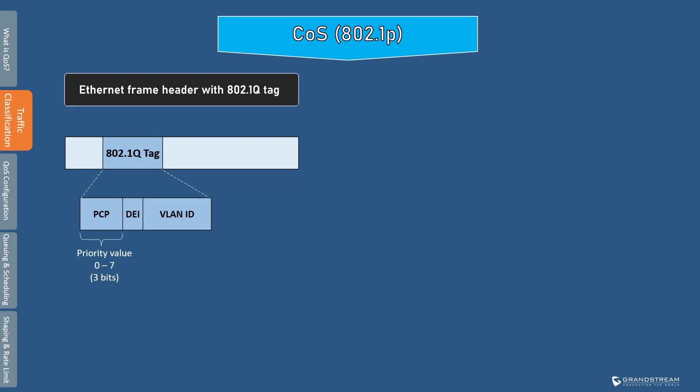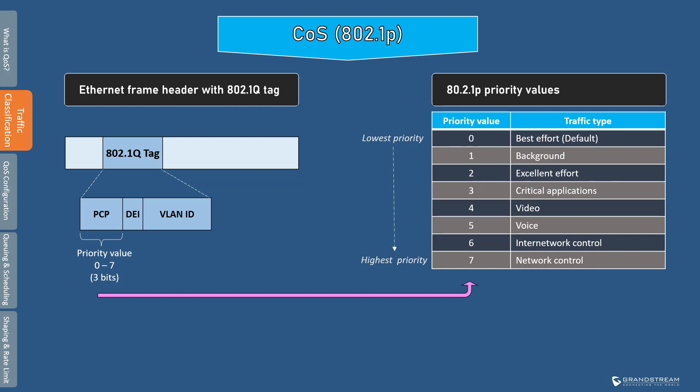This is a Layer 2 frame header with an 802.1q tag field that carries the CoS value in the three most significant bits, which are called the PCP bits. The three bits offer eight CoS values that we can use to classify traffic. This table shows the mapping of the CoS values and the traffic type. For instance, if we need to prioritize voice traffic from an IP phone, we can configure the IP phone with a class of service value of 5. The higher the value, the higher the priority. Usually, we do not use values 6 and 7 because they are reserved for network-controlled traffic.